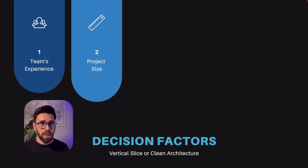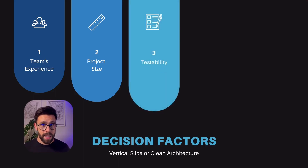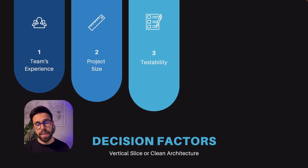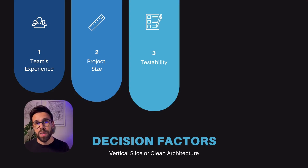The second factor is project size. If you are approaching a small, contained project, Vertical Slice Architecture is an excellent approach. Clean Architecture is overkill for most simple problems. The third factor is testability. Both offer good testability; however, Clean Architecture excels due to business logic isolation, allowing faster tests. But if you have a simple CRUD application, Vertical Slice Architecture is an amazing way to go because you don't have much logic to test besides reading and writing data.